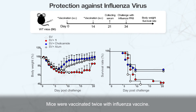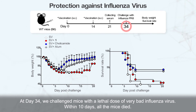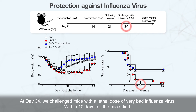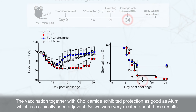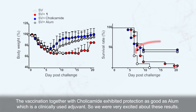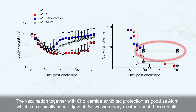Does it really work as a vaccine adjuvant? The answer is yes. Mice were vaccinated twice with influenza vaccine. At day 34, we challenged the mice with lethal doses of very bad influenza virus. Within 10 days, all the unprotected mice died. The vaccination together with coricamide exhibited protection as good as Addavax, which is a clinically used adjuvant. So we were very excited about these results.